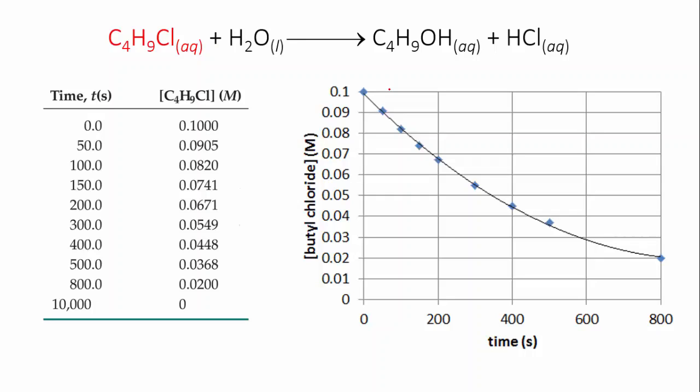Now you can see that this line isn't straight. It's curving. It starts off quite steep but gets less and less steep as the reaction goes on. This means that the rate of reaction is decreasing. It's slowing down as time goes on.